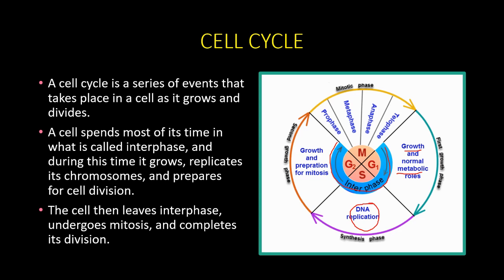After interphase, the cell is prepared for cell division, which is called mitosis. From the cell cycle picture, we can see that mitosis also consists of various stages or phases, starting from prophase to telophase, and then finally cell division occurs.